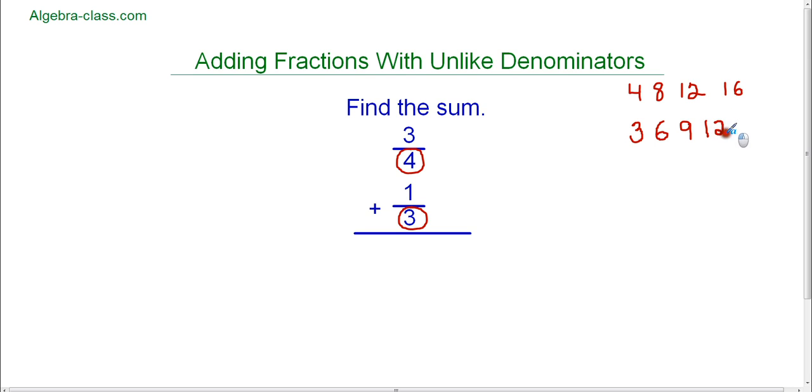I see a common multiple. I see twelve as a multiple of four and three. And as soon as I find the first multiple that is the same I can stop because that is going to be the least common multiple or the smallest multiple. This number twelve is now going to become the least common denominator. So I'm going to simply rewrite twelve here as the denominator of a new fraction.